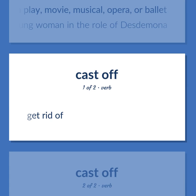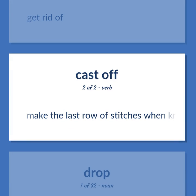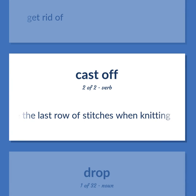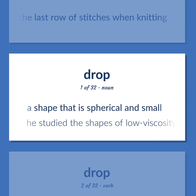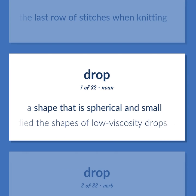Cast: get rid of. Make the last row of stitches when knitting. Drop: a shape that is spherical and small — he studied the shapes of low-viscosity drops.